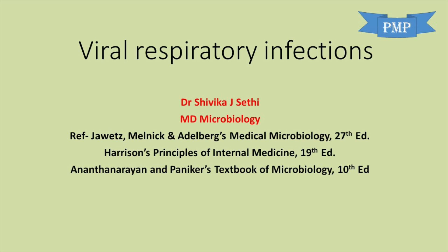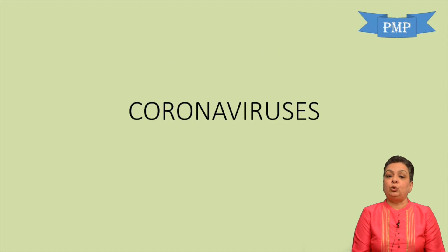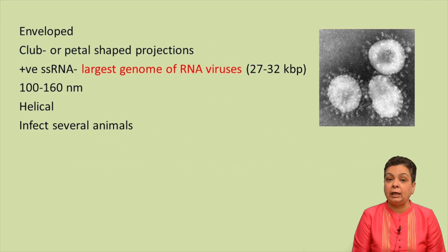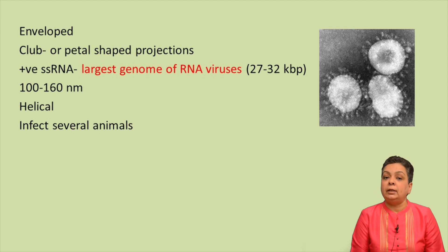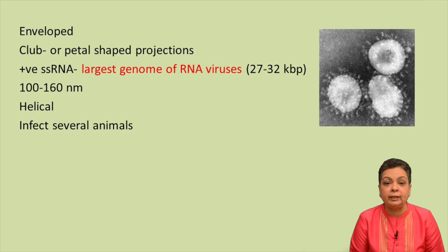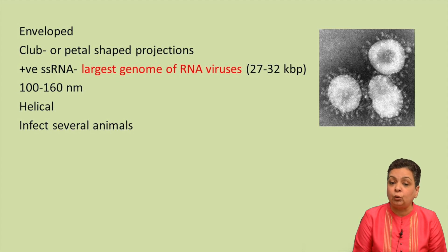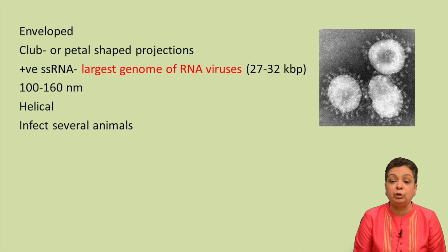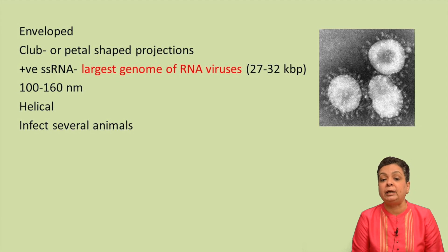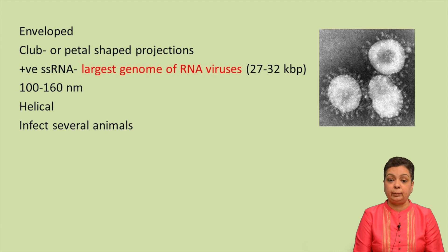Welcome to another session on viral respiratory tract infections. We'll be discussing coronaviruses in this session. Coronaviruses are enveloped, indicating that they would be sensitive to lipid solvents. They have club-shaped or petal-shaped projections on their surfaces, called peplomers, which give the appearance of a solar corona — hence the name coronavirus. You can appreciate that corona-type appearance in the image shown.